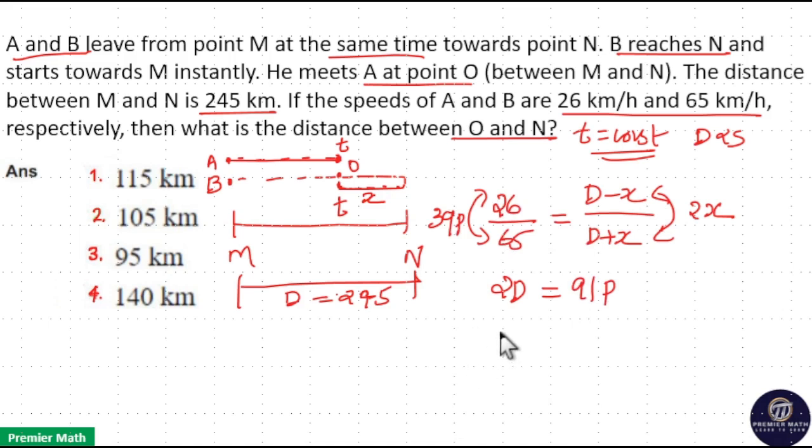Now here 2X equals 39 parts, means X equals 39 by 2 parts. 1 part equals 2D by 91. So X equals 39 over 2 times 245 divided by 91.